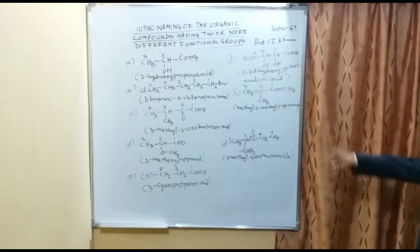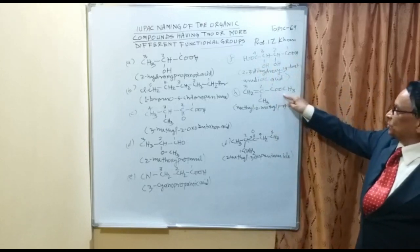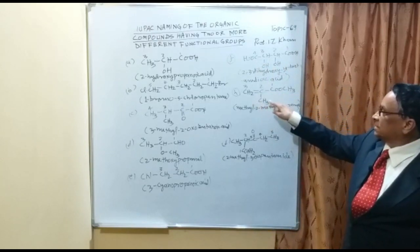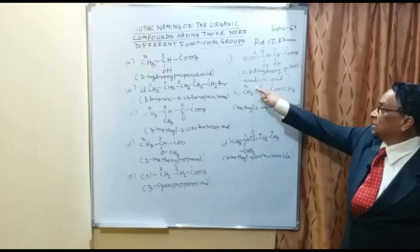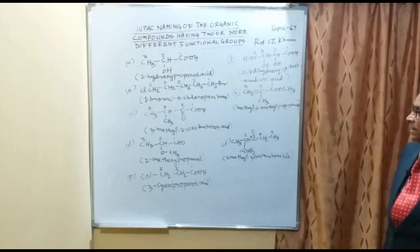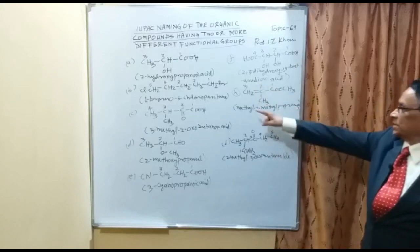In example H there are 3 carbons. There is a COOH group, and at carbon 2 there is a methyl group as well as a double bond.